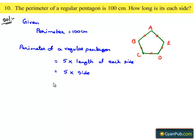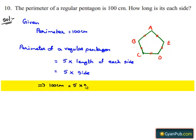Given that perimeter of the regular pentagon is 100 cm. This implies 100 cm is equal to 5 times the side. This can also be written as 5 times the side is equal to 100 cm.